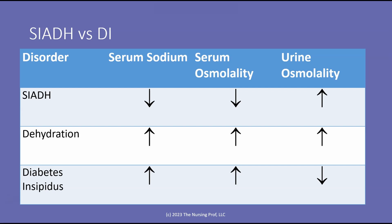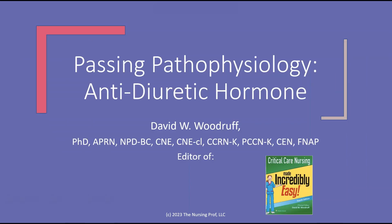Remember, when we're talking about ADH, we're talking about its effect on water in the body. The effect of water in the body is that it's going to have effects on brain cells — and that's the ultimate problem with having too much or too little water, as it dehydrates or over-hydrates our brain cells. Thank you for joining me for Passing Pathophysiology: Anti-Diuretic Hormone. My name is David Woodruff. Until next time.